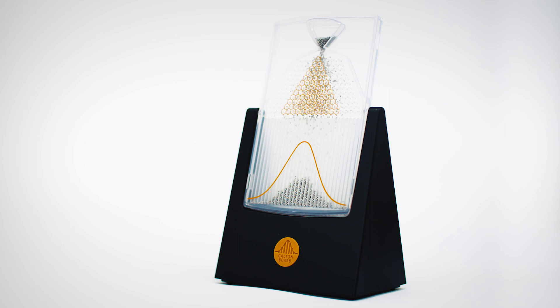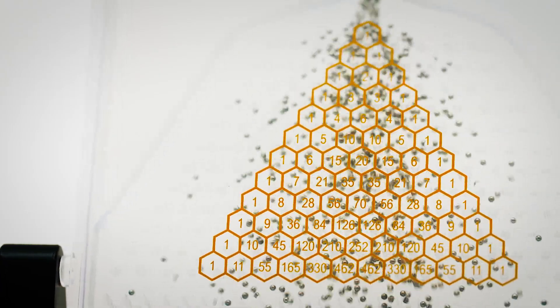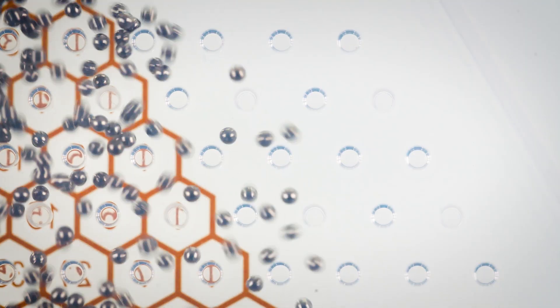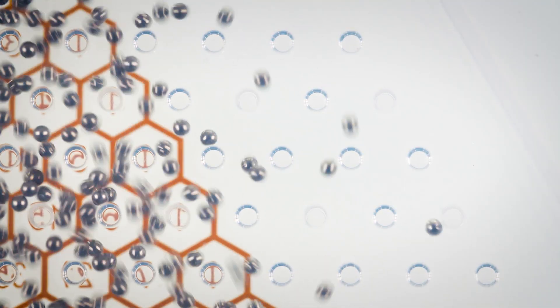If I have eleven rows, each time a bead hits this peg, it's the same as asking, do I flip a head or do I flip a tail? It's a binary choice. In effect, the total number of paths through the Galton board is two to the eleven, which is two thousand and forty-eight.